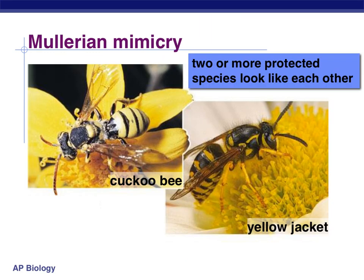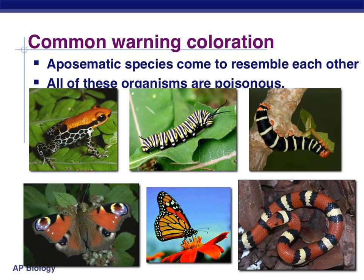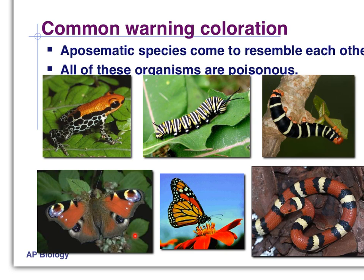The next kind of mimicry is called Müllerian mimicry, where you have two or more protected species that resemble each other. An example would be the cuckoo bee and the yellow jacket — one fairly dangerous, the other less so, but doing a good job impersonating the yellow jacket. Ecologists have noticed that aposematic species tend to resemble each other. Looking at several poisonous species, you see a repeated pattern of yellow, white, black, and orange. The thought process is that if predators associate these colors with animals that can make them sick, they tend to leave all animals with that coloration alone.